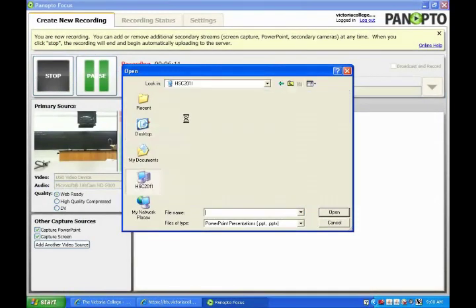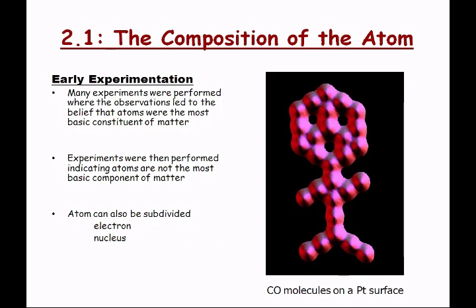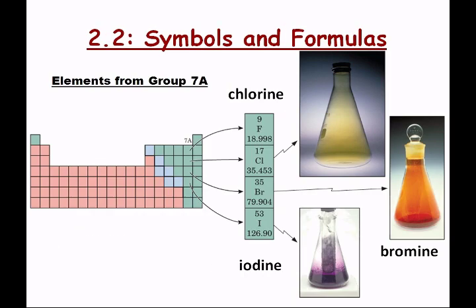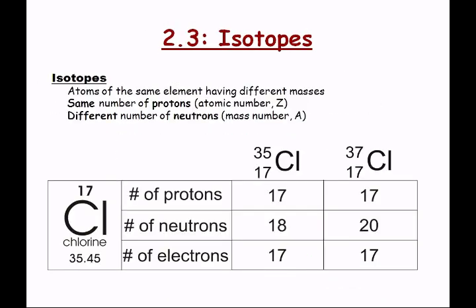Let's get started with Lecture 6. We got to isotopes last time. Isotopes are atoms of the same element but they have different masses — just like chlorine has these two isotopes: chlorine-35 and chlorine-37.